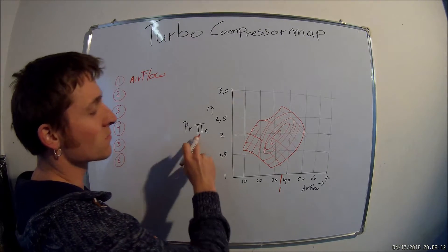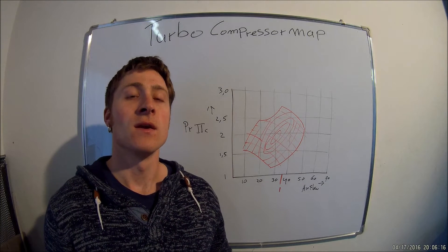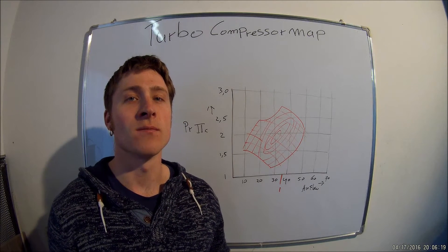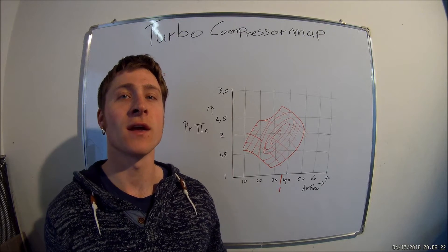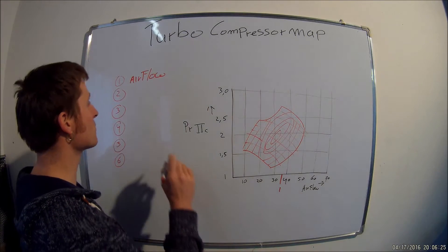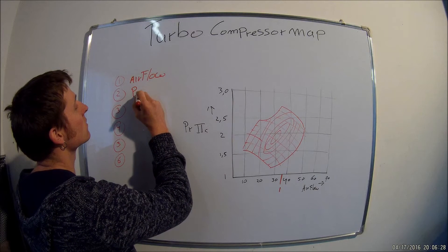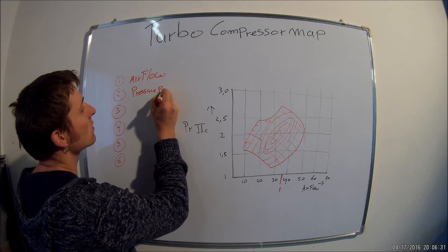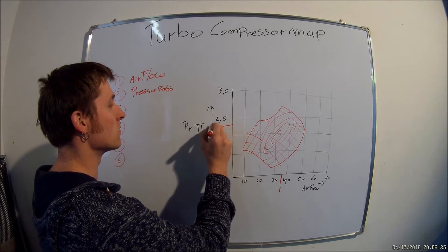The second one is pressure ratio. Pressure ratio is the difference, or ratio, between the inlet manifold intake pressure and the turbo outlet pressure — that's the ratio between those two. That's the pressure ratio, number two.